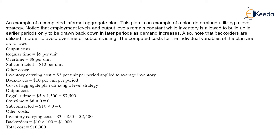The computed costs for individual variables of the plan are as follows: output costs — regular time $5 per unit, overtime $8 per unit, subcontracted $12 per unit. Other costs: inventory carrying cost $3, back orders $10. This gives us the cost of aggregate planning utilizing a level strategy.